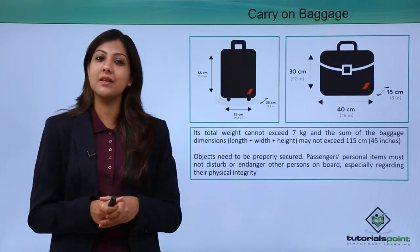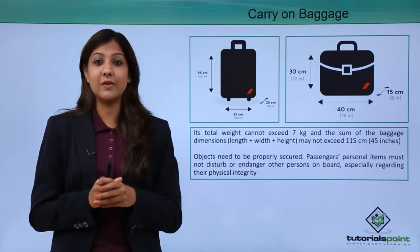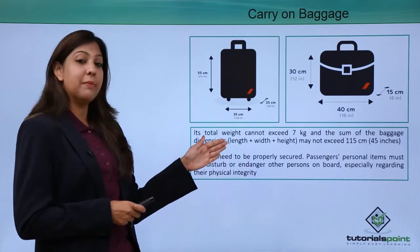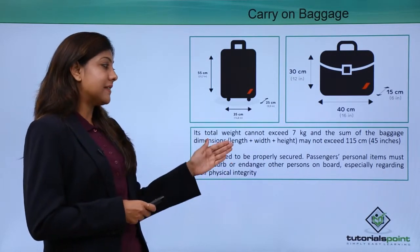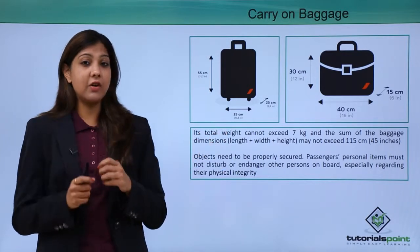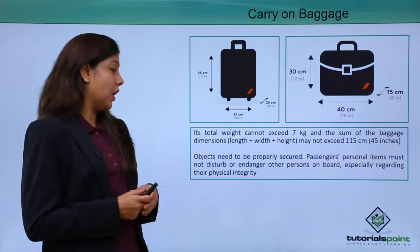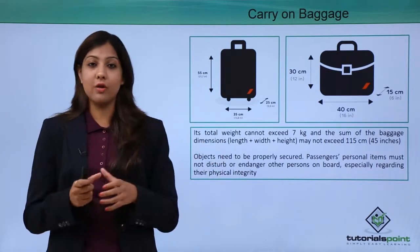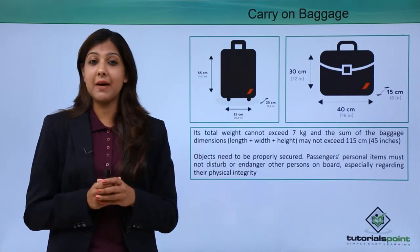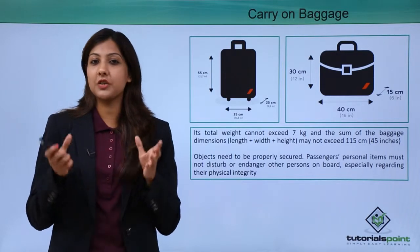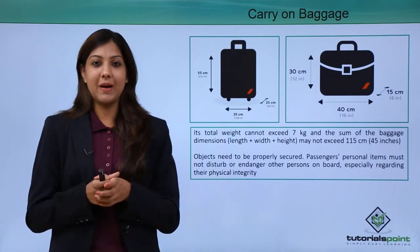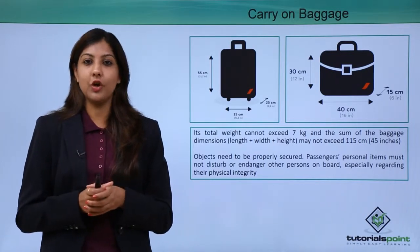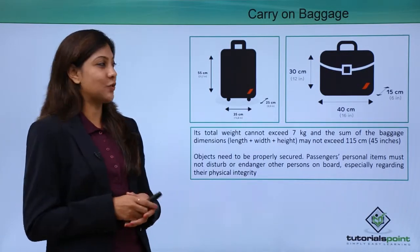These dimensions are checked by the security staff as well as the ground personnel or reservation staff during check-in. Objects must be properly secured — passengers' personal items must not come in the way of or endanger other persons on board. You have to keep in mind that the objects you put inside carry-on baggage should not endanger or affect the safety of any other passenger.